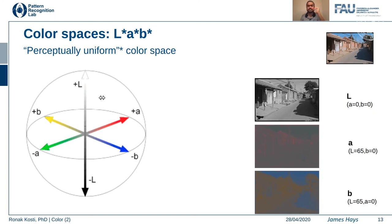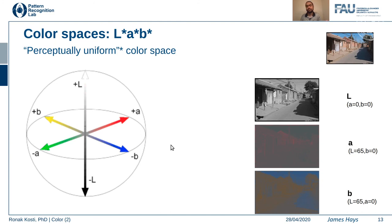Last but not least, LAB is a perceptually uniform color space. It is a simple sphere with L, A, and B as the three different axes of a 3D sphere. L represents the intensity value, and the A and B channels have different combinations of values which make them perceptually uniform. There are more color spaces out there — depending on the problem domain you are working on, you can choose one over the other.